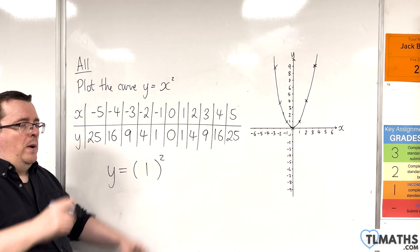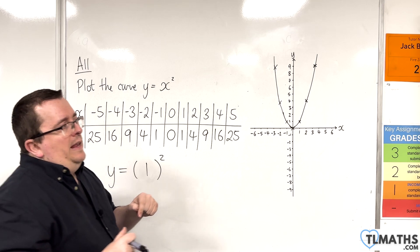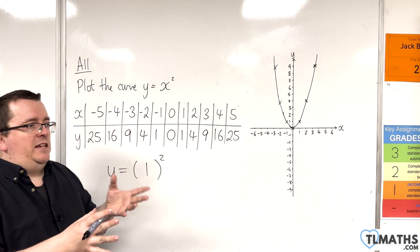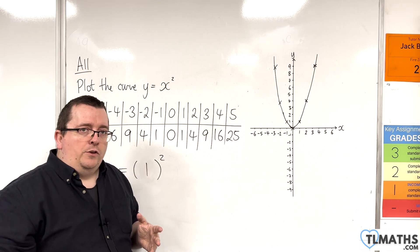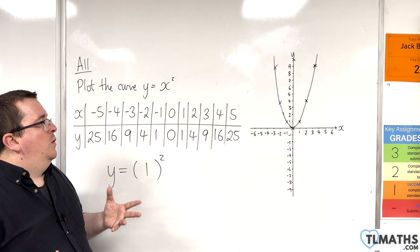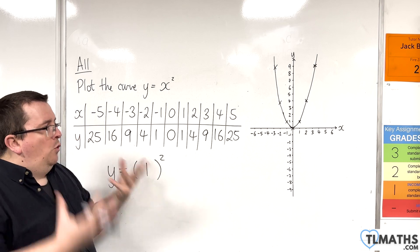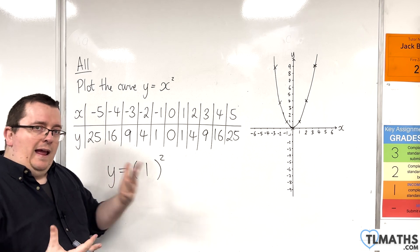So, this is y equals x squared. And, what we're going to do is we're going to investigate, in general, what the parabolas look like. Where can they be located on the graph? And, how can we plot some more parabolas and see how they fare?